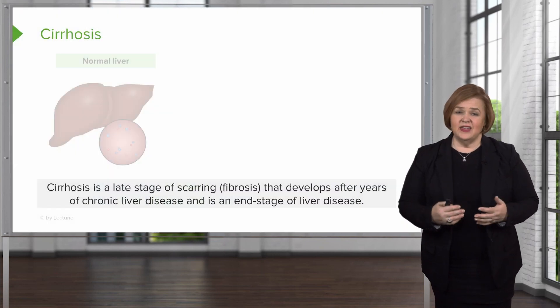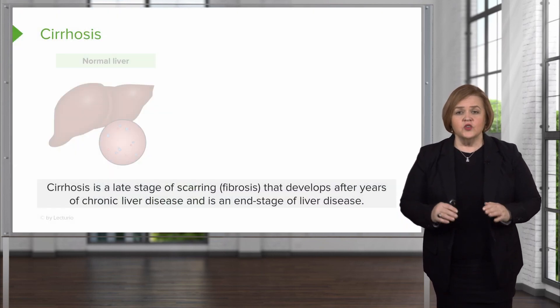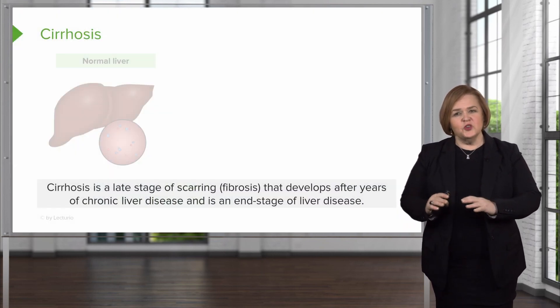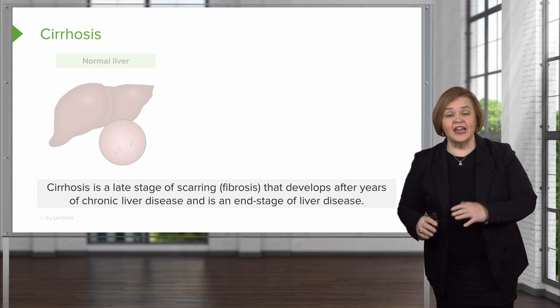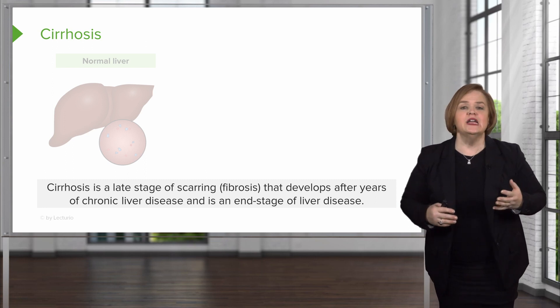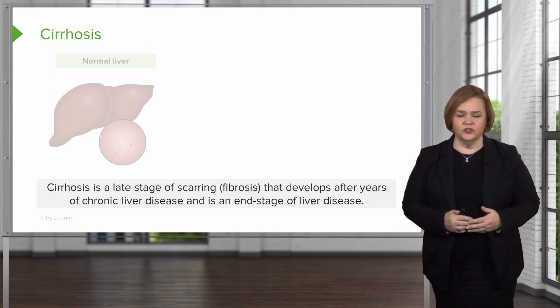Cirrhosis is a progressive problem in your liver. It's a late stage of chronic disease. So before we show you what that looks like, I want to remind you what a healthy liver looks like.